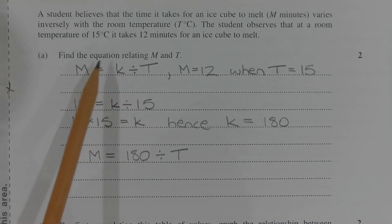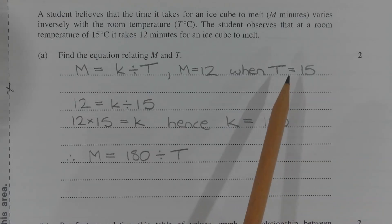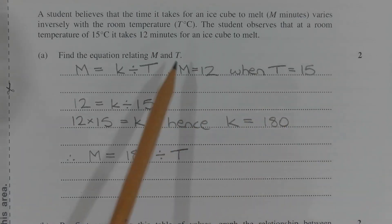To find the value of k, we need to substitute a known value for m and T. Now we know that m equals 12 when T equals 15, and substituting these two values into the equation and rearranging, we can solve for k. So 12 is equal to k divided by 15. Multiplying both sides of the equation by 15, we get 12 times 15 equals k.